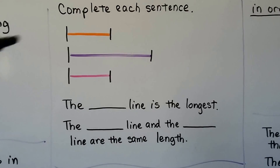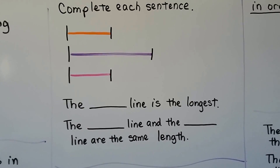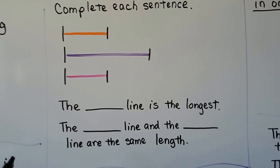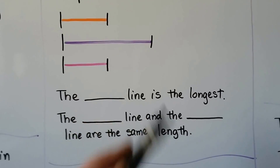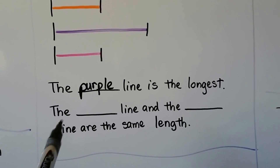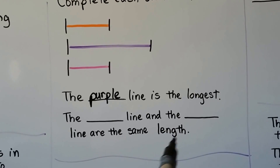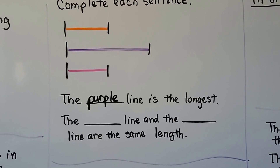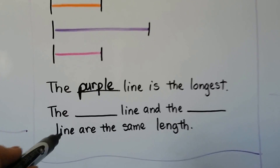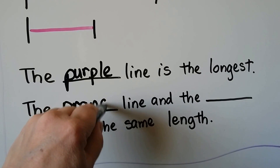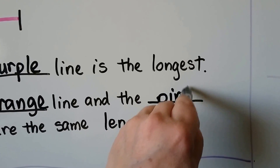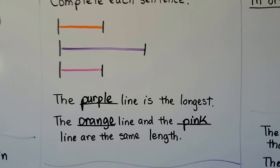Complete each sentence. Here we have an orange line, a purple line, and a pink line. The blank line is the longest — which line is the longest? It would be the one that sticks out the most. The purple line sticks out the most, so the purple line is the longest. The blank line and the blank line are the same length. The orange line and the pink line are the same length, and the purple line is the longest.